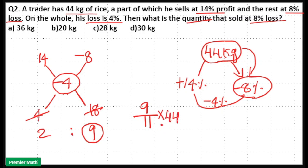So in 44 kilogram, out of 11 parts, 9 parts are 8 percentage loss. So that means your answer is 11 4's are 44, 9 into 4 is equal to 36 kilogram. So option A is your answer.